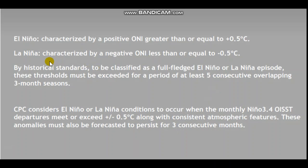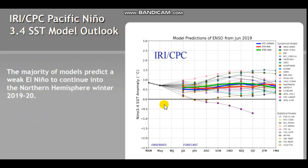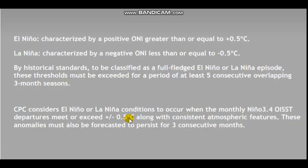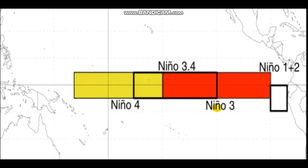Anything above 0.5 is classified as El Niño. La Niña is characterized by a negative ONI, meaning a three-month period equal to or less than negative 0.5°C. Between those two thresholds is the neutral zone, and I think this year we might end up there. At least five consecutive overlapping three-month seasons are required for an official designation.